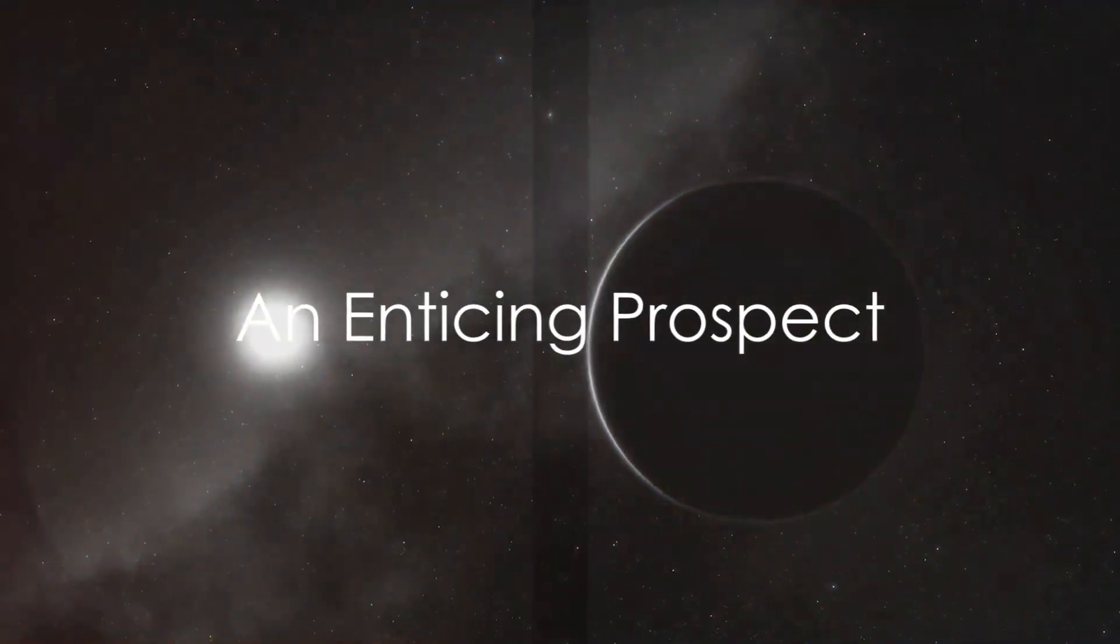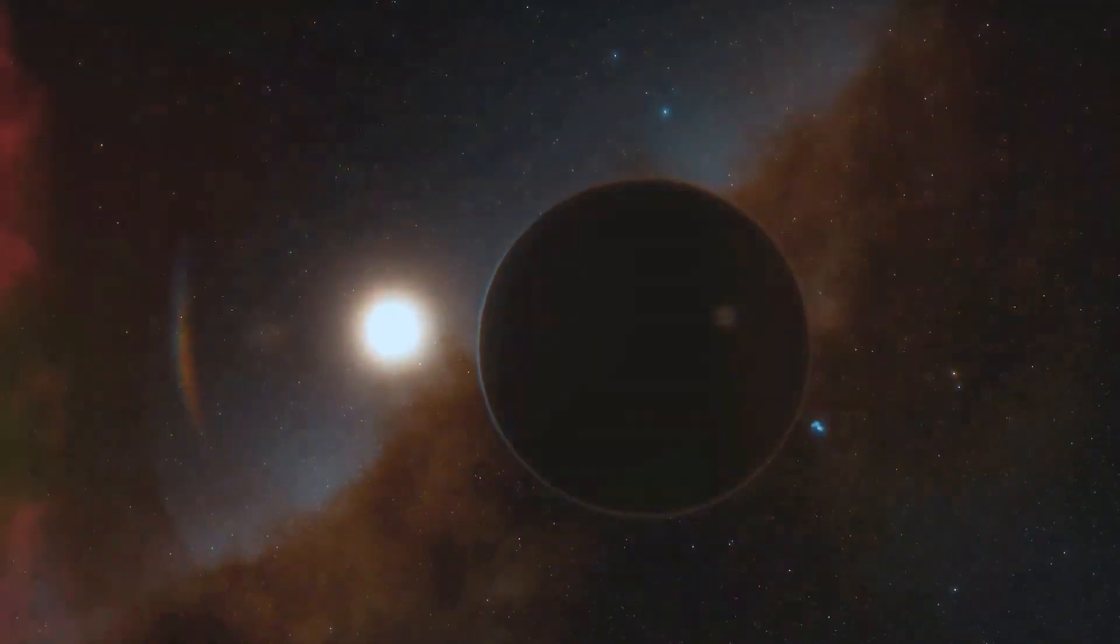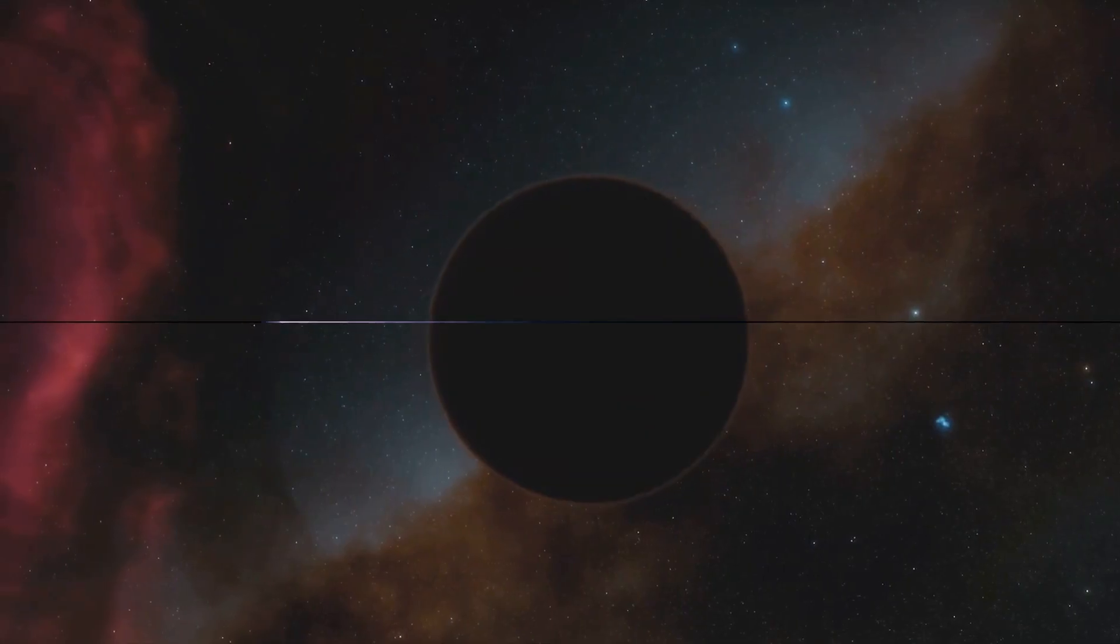Our final stop is Gliese 581g. This Super Earth's position within its star's habitable zone and the potential for liquid water make it an enticing prospect in the search for life beyond Earth.